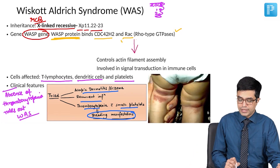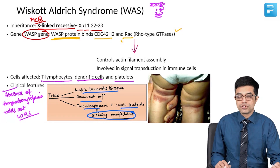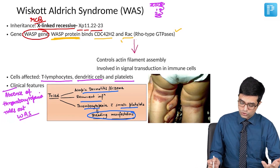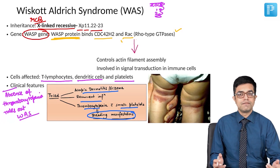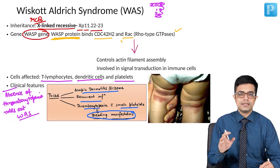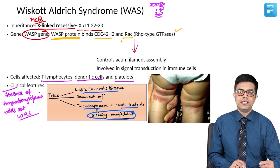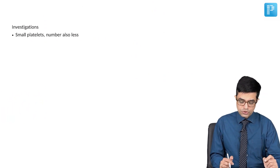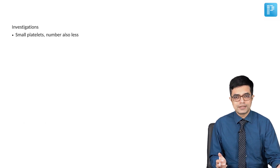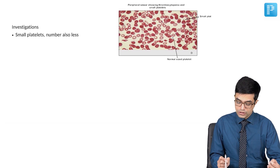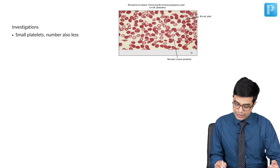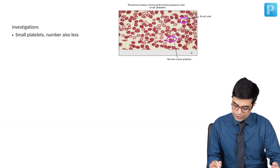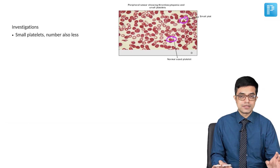A similar photograph was shown in the NEET-PG exam and can also be asked in super speciality exams — a child with a rash, recurrent infections, and low platelet count, asking for the diagnosis. That is how a visual, integrated clinical MCQ was asked. On investigations, small platelets are seen — the size and number are low — and the peripheral smear shows sparse, small-sized platelets.